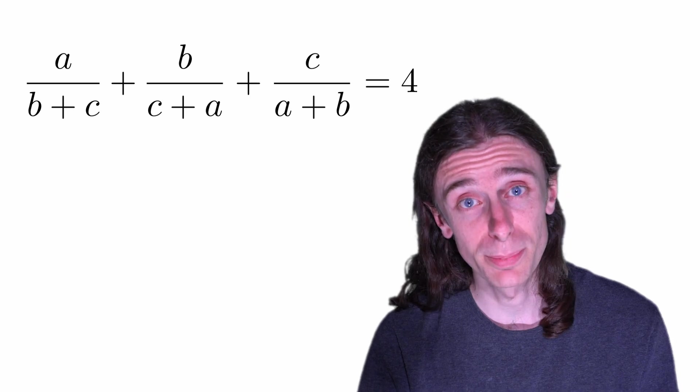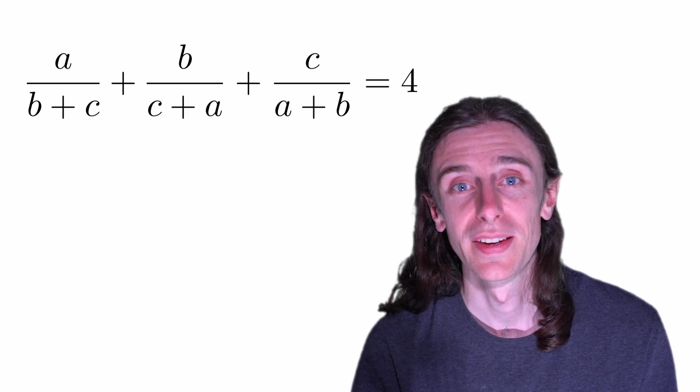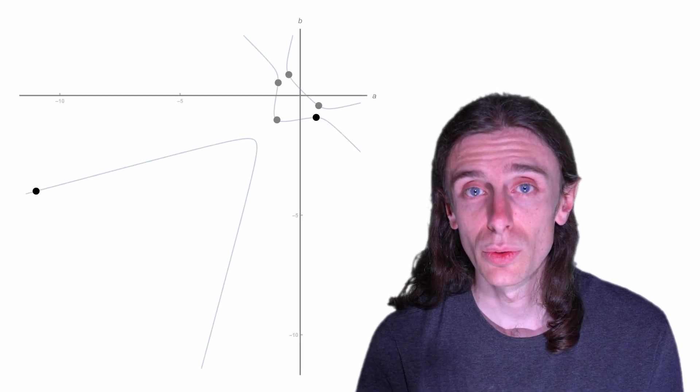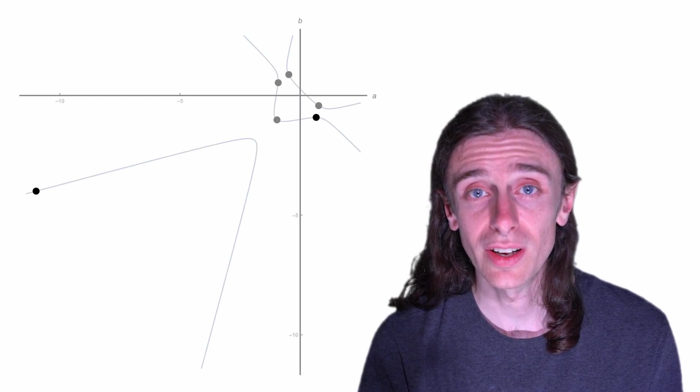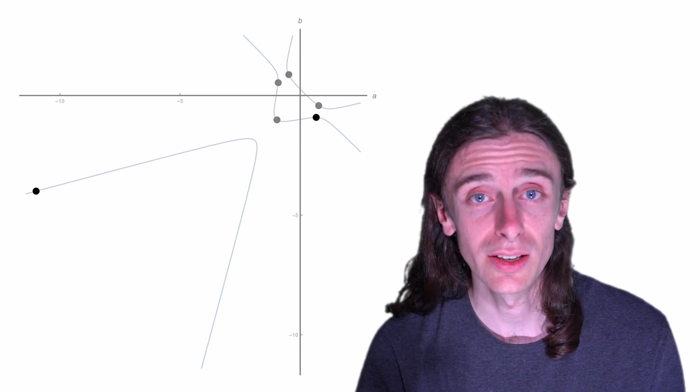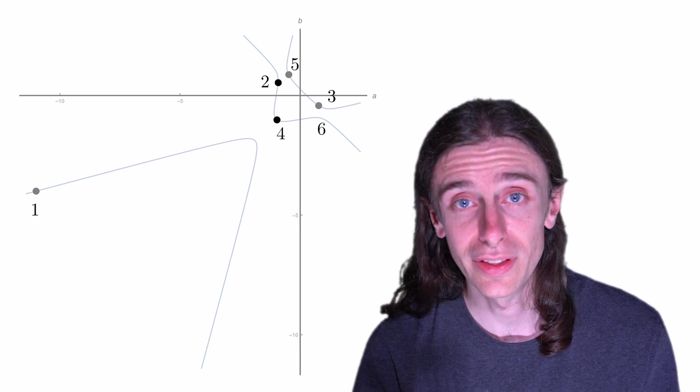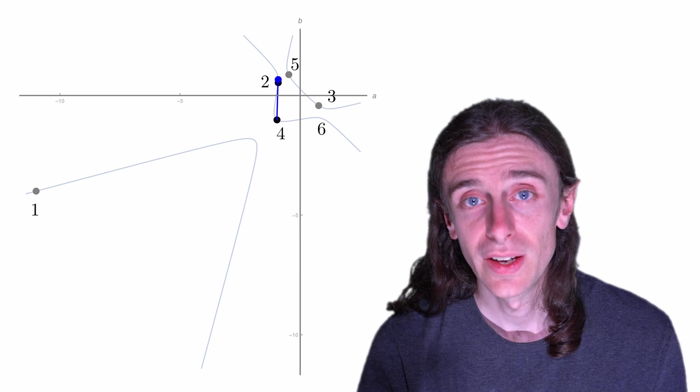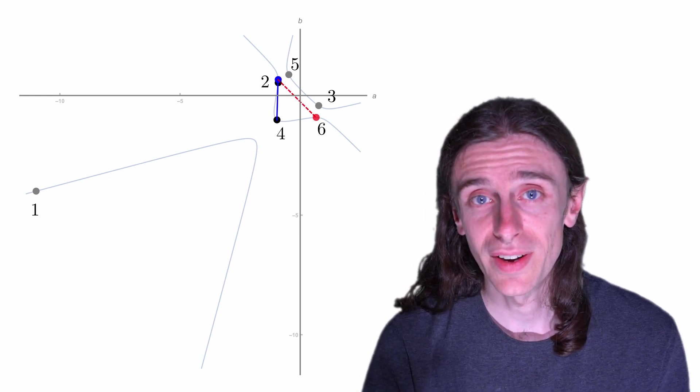So probably the thing that's not very satisfying about this is that I haven't convinced you that this is the least number of apples that you can solve this equation with. It turns out it is, but that's a lot harder to prove. I can give you some sense of why it might be true just by showing you something interesting about the way that we were generating solutions. So you may have wondered what would have happened if we'd started drawing lines between, say, the second and fourth of these points here. Well, actually, you'd see that that was one of the points that we found anyway.